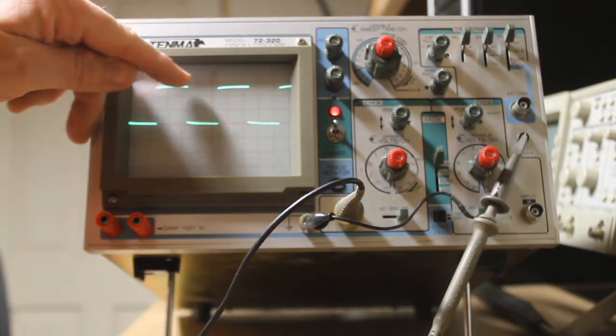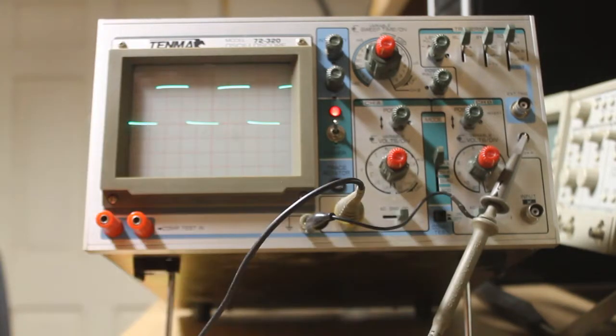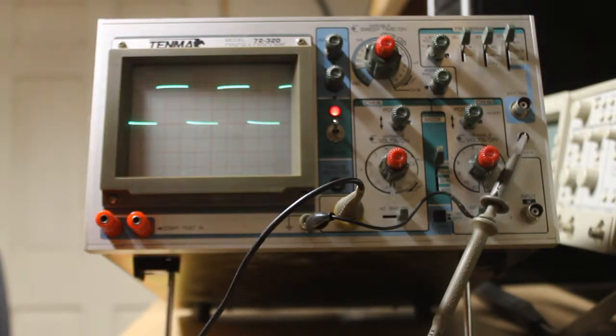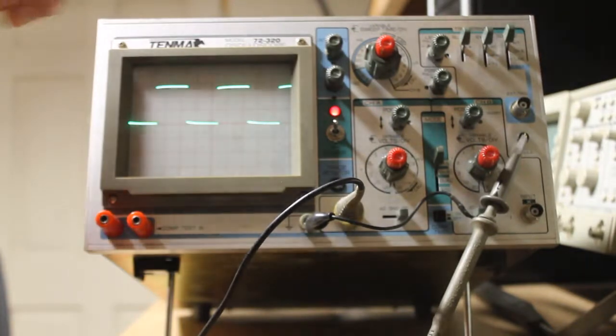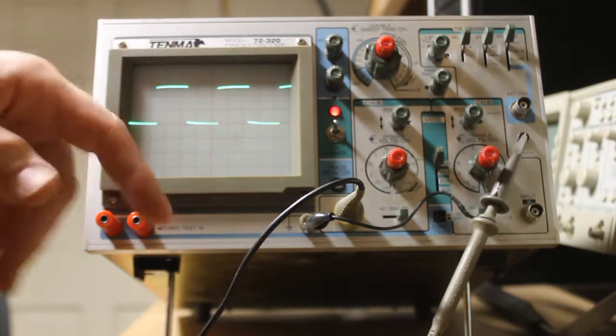Now, if you'll notice where it slopes off on the ends, that can be fixed through probe compensation. But this probe is already set for my TDS-320, so I'm not going to mess with doing any compensation on it.